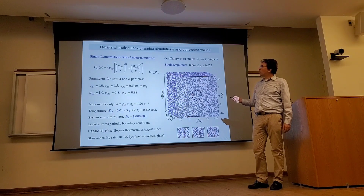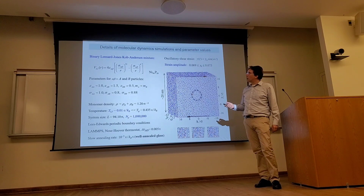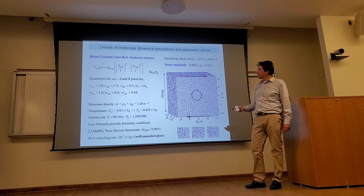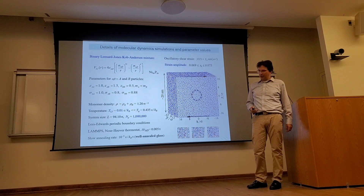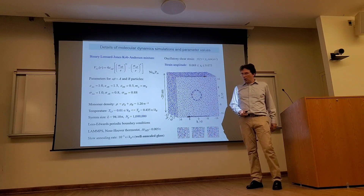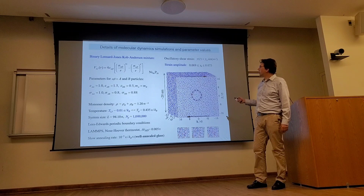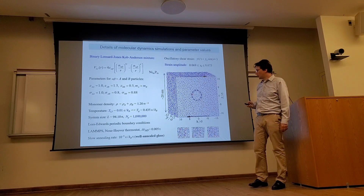This brings us to the details of the atomic simulation model. We consider a binary energy model that mimics a nickel-phosphorus system and consider simulations at constant density, low temperature, and a relatively large system with periodic boundary conditions. The glass is first computationally slow-annealed to obtain a well-annealed sample, and then subjected to oscillatory shear deformation within a specified range of strain amplitude.